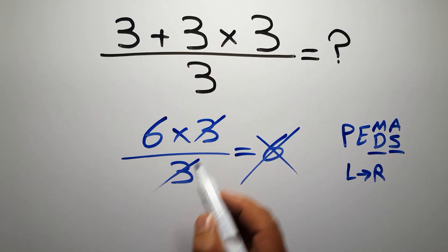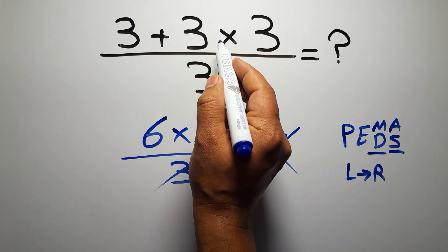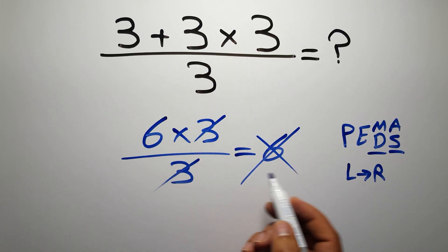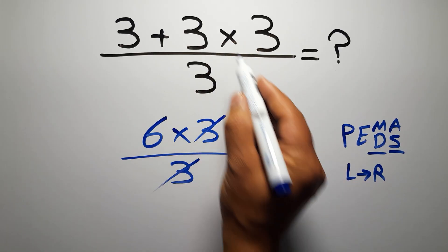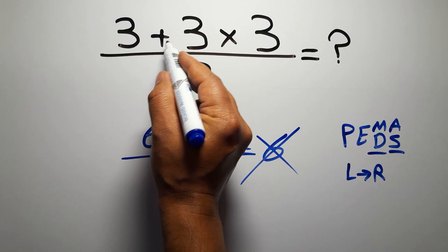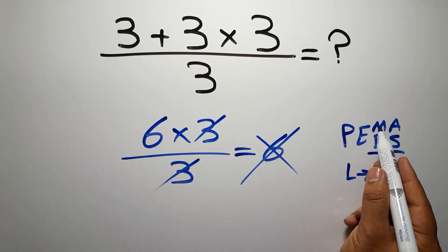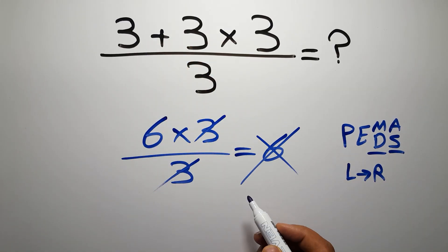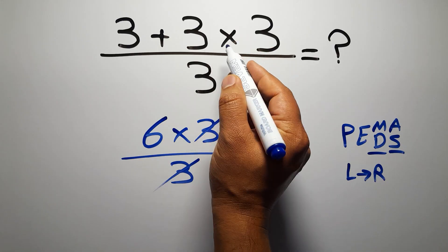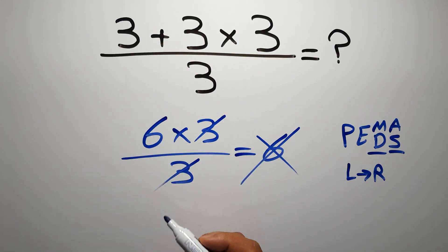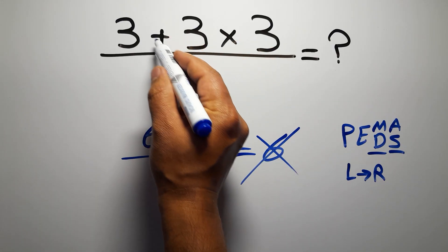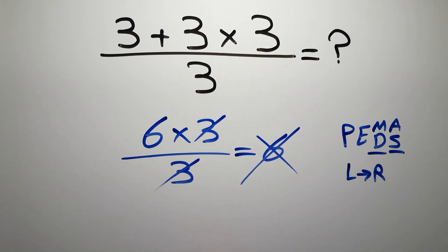Here in the numerator, we have one addition and one multiplication. According to PEMDAS, multiplication has higher priority than addition. Because multiplication comes before addition, so here first we have to do this multiplication, then this addition. If we do this addition before this multiplication, it is wrong.